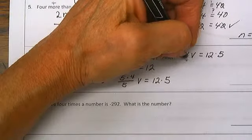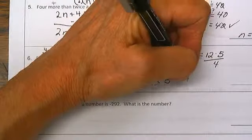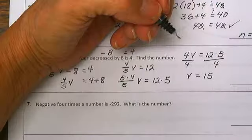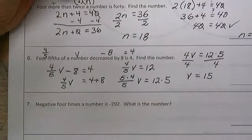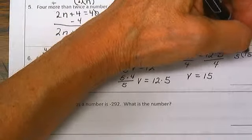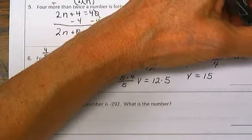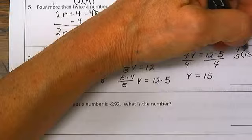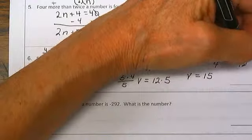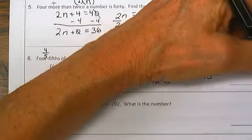4V divided by 4 is equal to 60 divided by 4, or 15. Am I sure I'm right? Let's check. Four-fifths times 15 minus 8, is that equal to 4? 15 divided by 5 is 3 times 4 is 12 minus 8. Yep, 4 is equal to 4.